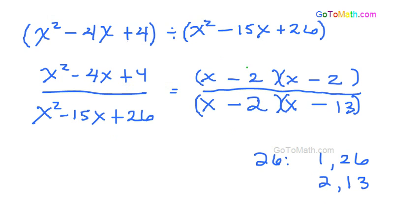Alright, so now we've got an x minus 2 in the numerator and 1 in the denominator. We can cancel those out and so it looks like we're going to be left with an x minus 2 over an x minus 13.